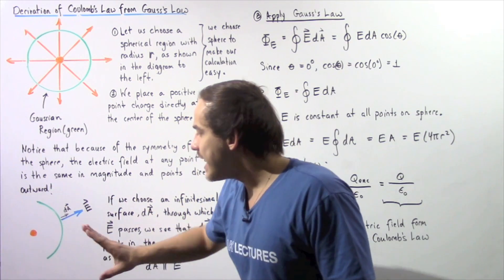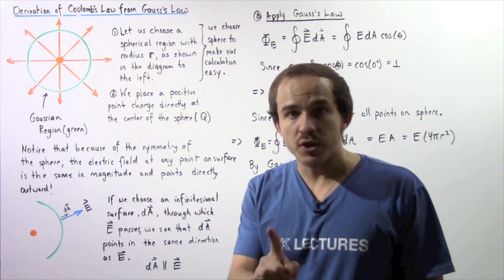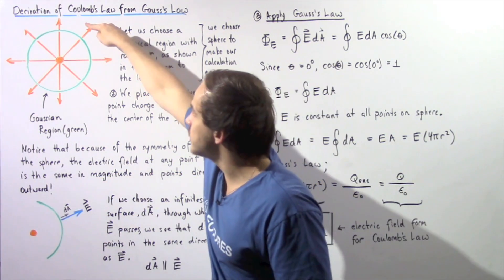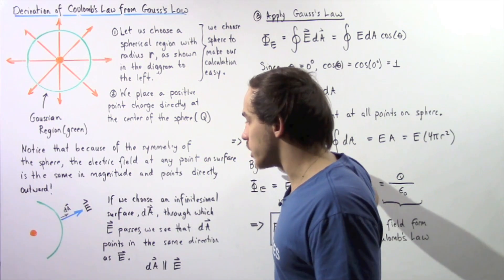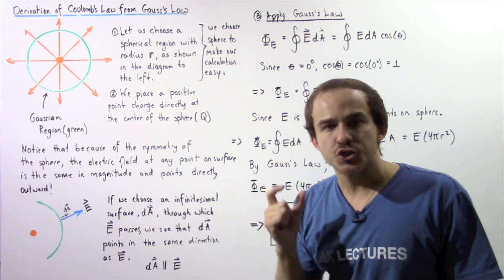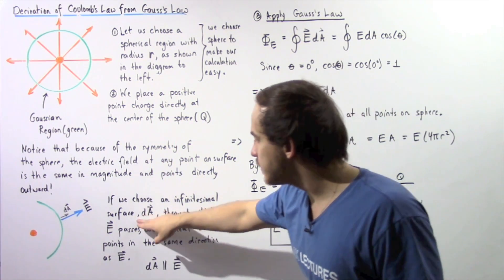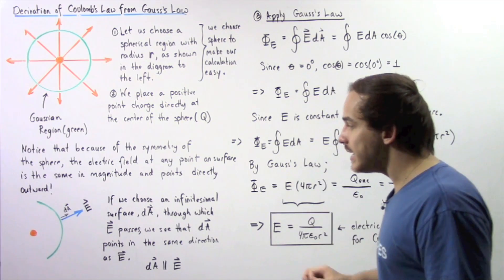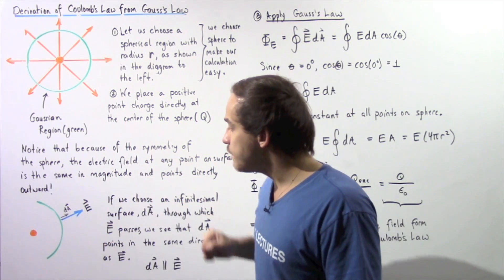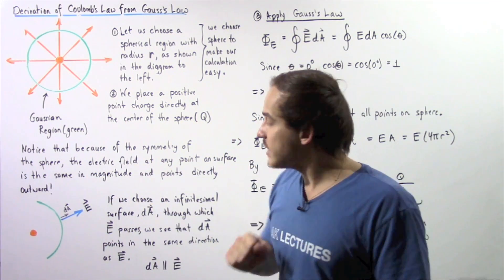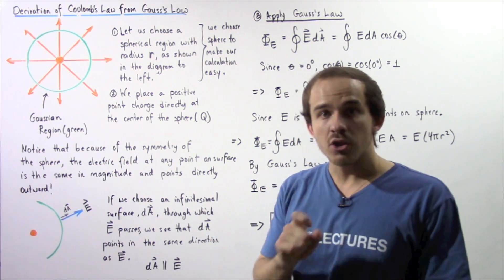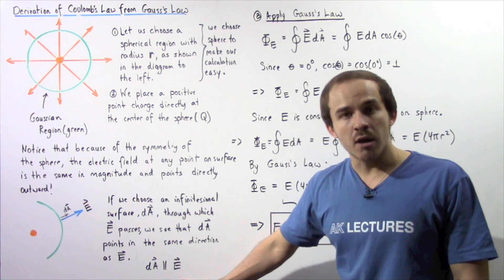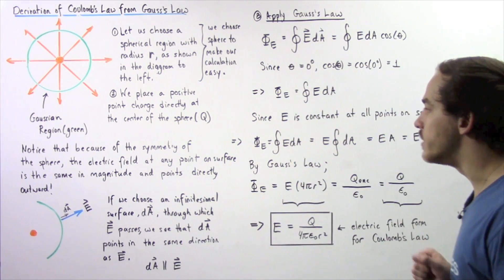That's because our electric field lines begin on the positive charge and will extend outward in all possible directions, as shown in the following diagram. If we examine any section on the surface of our sphere, we shall see that the electric field lines point in the same direction, directly outward. If we choose an infinitely small surface section given by dA through which this electric field vector points, that will mean that our vector of electric field will point in the same direction as the dA vector. In other words, our dA is parallel to our electric field vector, and that will become important in just a moment.